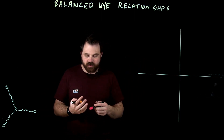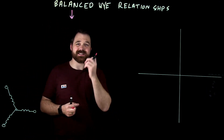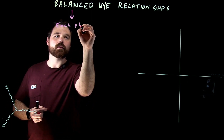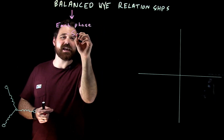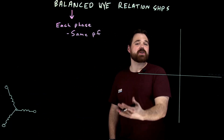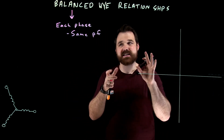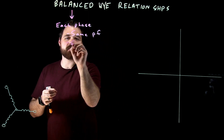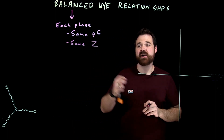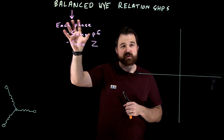So three phase balanced load. First, I want to break down this word balanced. In order to be a balanced load, that means each phase will have the same power factor, right? So if it's a resistor, it'll be one; if it's a pure capacitor, it'll be zero. The same power factor — if it's lagging, they're all lagging by the exact same amount — and the same impedance within each phase.